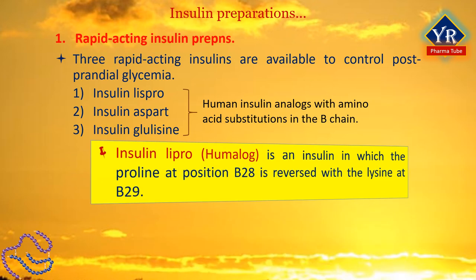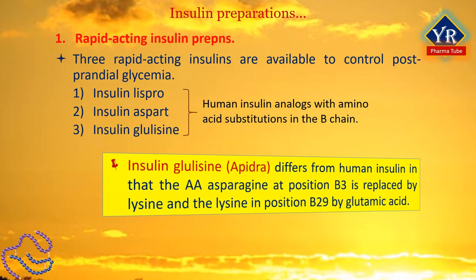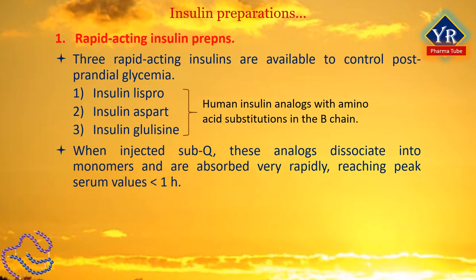Insulin lispro (Humalog) is an insulin analog in which the proline at position B28 is reversed with the lysine at B29. Insulin aspart (NovoLog) is a single substitution of proline by aspartic acid at position B28. Insulin glulisine (Apidra) differs from human insulin in that asparagine at position B3 is replaced by lysine and lysine at position B29 is replaced by glutamic acid. When injected subcutaneously, these three analogues quickly dissociate into monomers and are absorbed very rapidly, reaching peak serum values in as little as one hour.